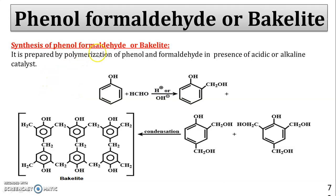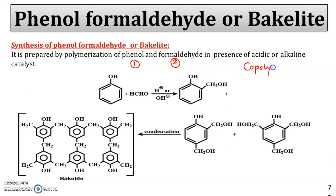First we are going to see the synthesis of phenol formaldehyde, or Bakelite. It is prepared by the polymerization of two monomers: phenol and formaldehyde. When two different monomers are present, it forms a copolymer. So Bakelite is a copolymer formed in the presence of an acidic or alkaline catalyst.